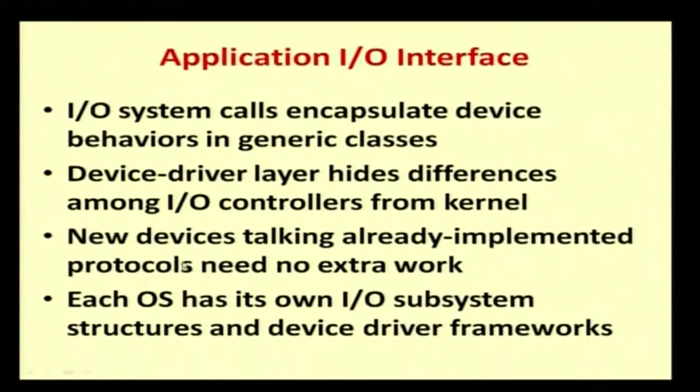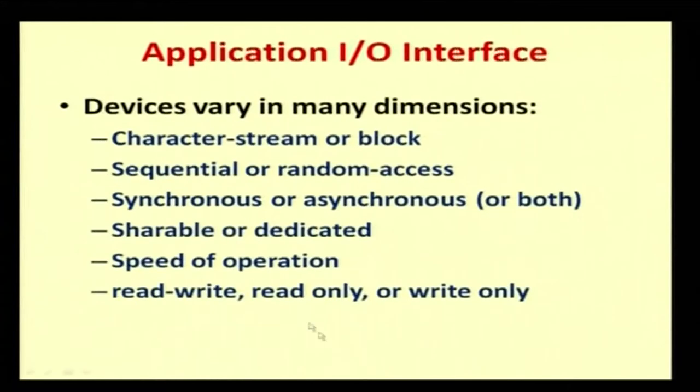New devices that already implement a protocol need no extra work. Each operating system has its own I/O subsystem. Devices vary in many dimensions: first, based on block or character stream; second, based on access methodology. We have two different accesses — sequential access and random access. This access methodology varies from system to system; in Unix, Windows, and Solaris, the access methodology may each be different.